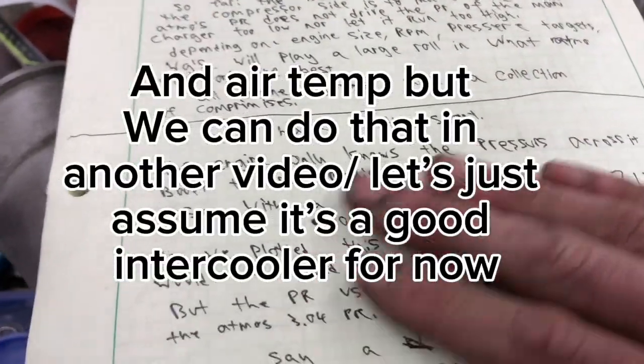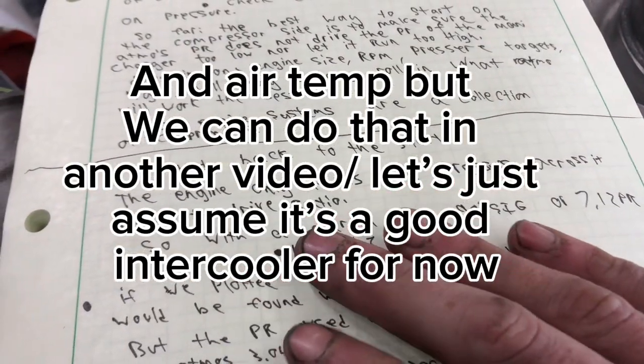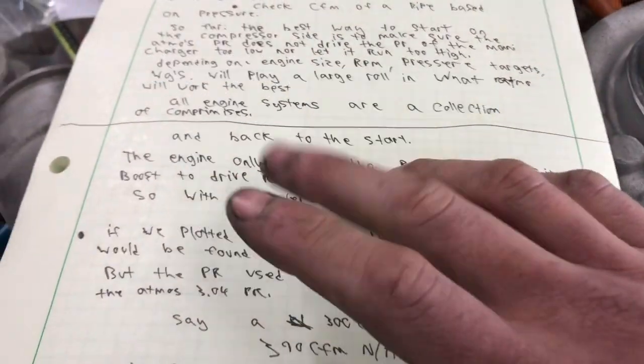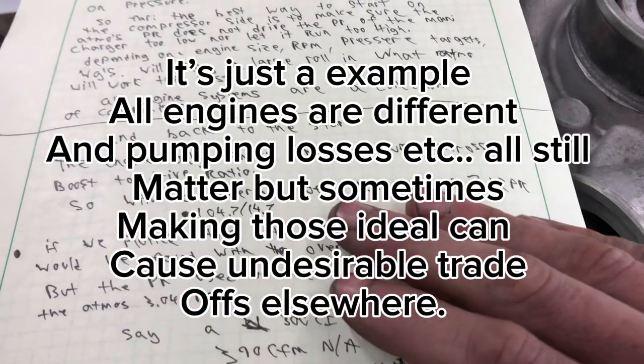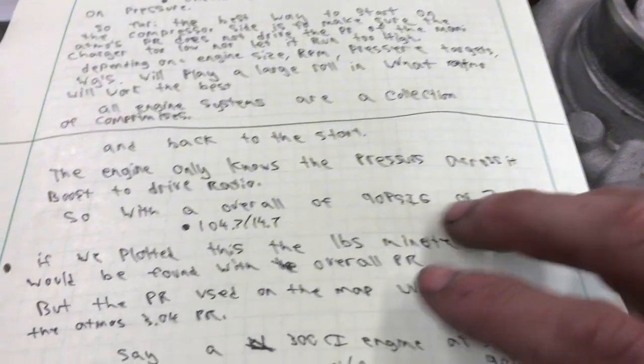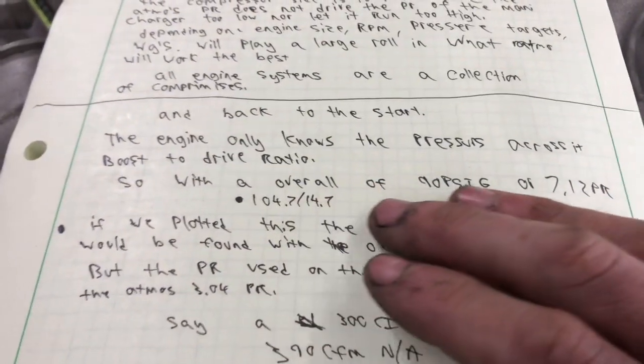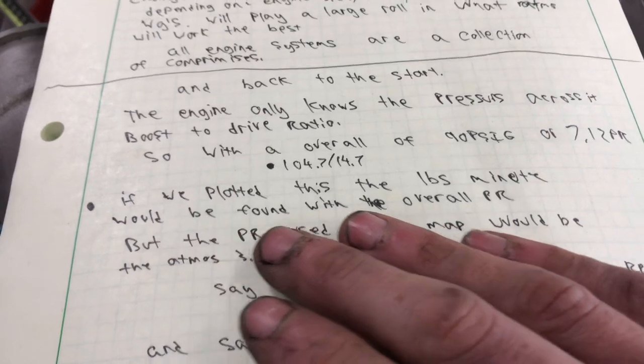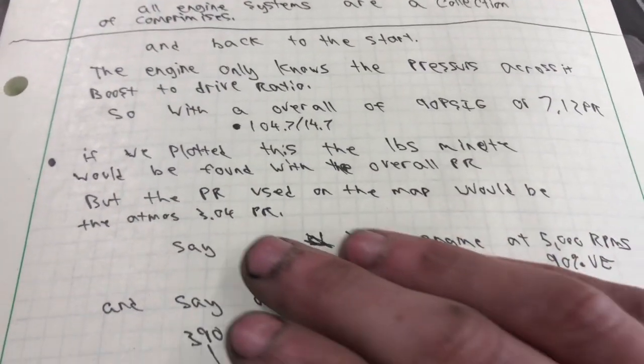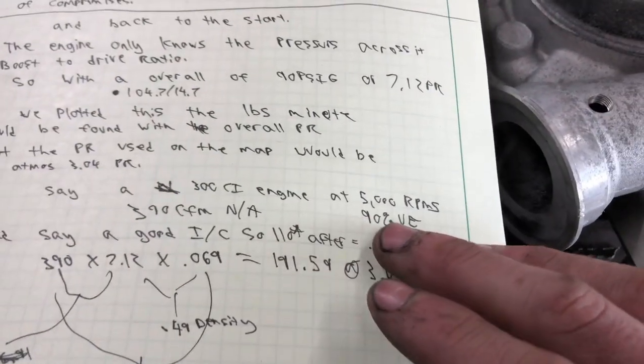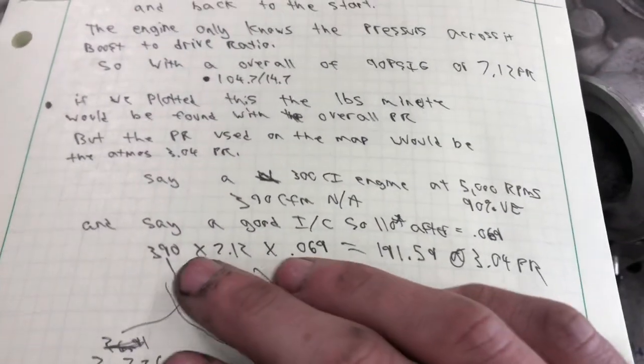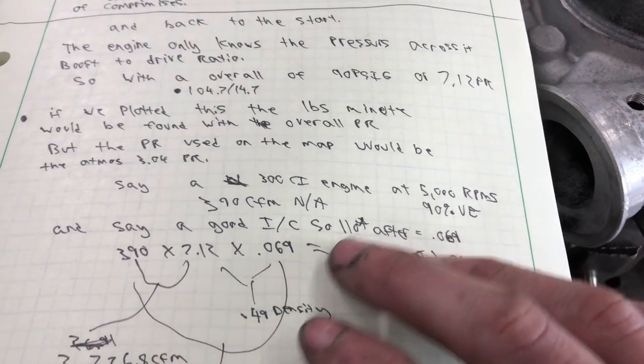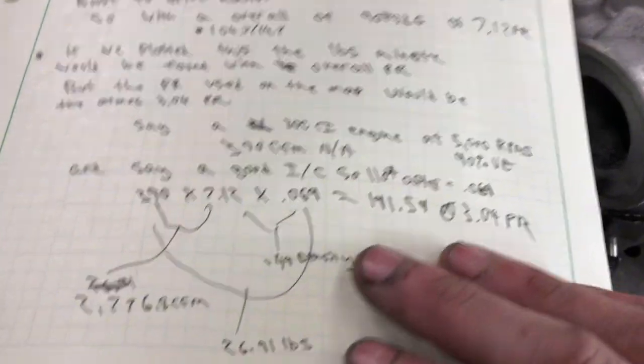So back to the start. Just for some fun. Right? The engine only knows the pressure across the cylinder head. So the boost to drive ratio. And engines tolerate boost to drive ratios differently. Depending on engine speed cam and cylinder head. So that's also neat. So with the overall of 90 psig. Or a 7.12 pressure ratio. Because it's 90 plus 14.7 divided by 14.7. The motor only knows this part. The Atmo only knows the 3.04. We plotted this. The pounds minute would be found with the overall PR. But the PR used on the map would be the Atmos PR of 3.04. So you had a 300 cubic inch engine at 5,000 RPM at 90% VE. That's 390 CFM. And we said we have a good intercooler. So after we compress the thing to 90 pounds of boost. And say air to water. And bring it down to 110 degrees afterwards. That's 0.069 pounds per cubic foot. So we got everything we need now. It's censored up. The motor is censored up. And we know what the VE is in this case.